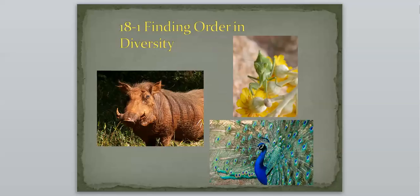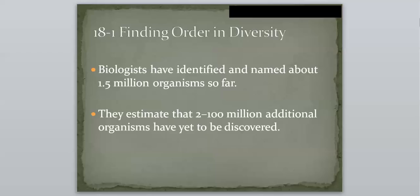Biologists have identified and named about 1.5 million organisms so far, and they estimate that 2 to 100 million additional organisms have yet to be discovered. So how are we going to classify all of these huge amounts of creatures?